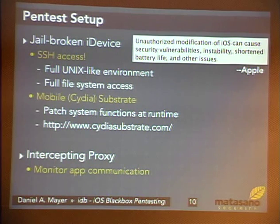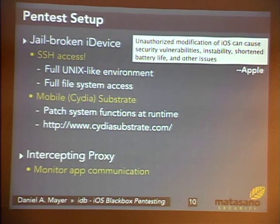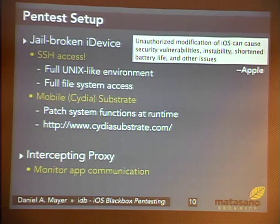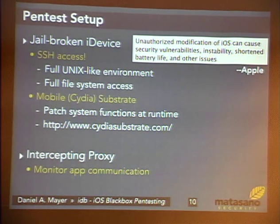For a pen test you want to have a jailbroken device. The reason for this is that everything is sandboxed, so if you actually want to see what's going on on the device you have to break it. It gives you SSH access and a full Unix environment — you can see any files which are stored, not only from apps but also from the OS. The other interesting feature is mobile substrate, which basically allows you to hook into any function on the device and pre-compiled applications already there. You can rewrite those apps on the fly and runtime-patch them. You also need some sort of proxy system to look at all network traffic — if it's just an HTTP API you can use something like Burp; if it's something different you need some binary proxy.